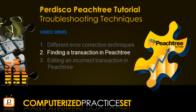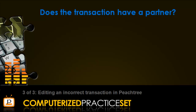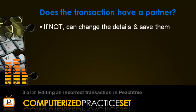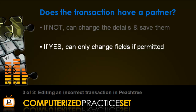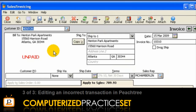Now that we've covered finding transactions in Peachtree, let's learn how to edit the incorrect transaction that we have located. The first question to ask is: does the transaction have a partner or other transactions applied to it? If the answer is no, we can change the transaction details and record the changes by pressing Save. If there are associated transactions, you can only change the fields that are permitted by Peachtree. Let's open the March 15 invoice. Notice this invoice has no payment applied to it, so changing the Customer ID field is a straightforward process.